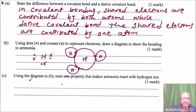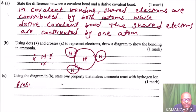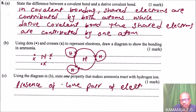Using the diagram in part B, state one property that makes ammonia react with the hydrogen ion. The reason is that nitrogen in ammonia contains a lone pair of electrons. So you can say: presence of an unshared pair of electrons.